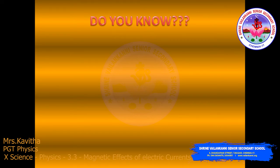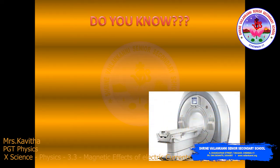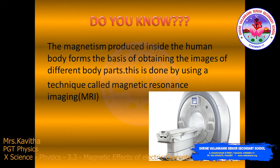Do you know — what you are seeing in the diagram is an MRI scan. The MRI scan works on the principle of magnetism; the magnetism produced inside the human body forms the basis of obtaining images of different body parts. This is done using a technique called magnetic resonance imaging, which is nothing but MRI. With the help of MRI scans, doctors are able to diagnose and analyze various problems and diseases. Thus magnetism has important uses in medicine.